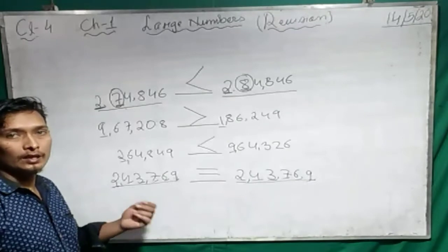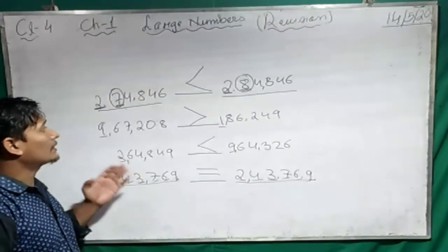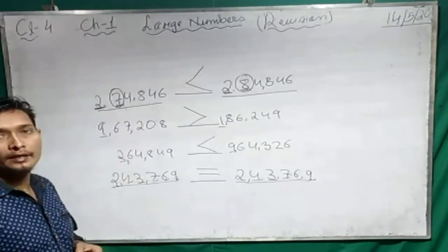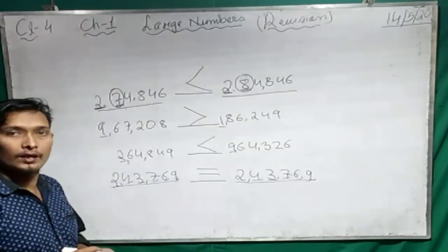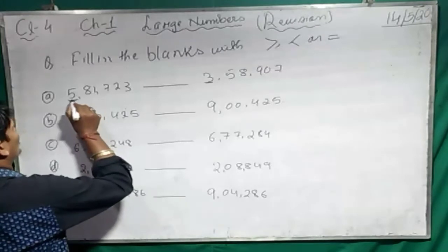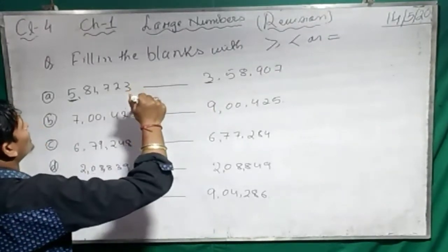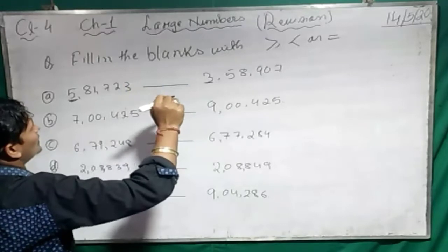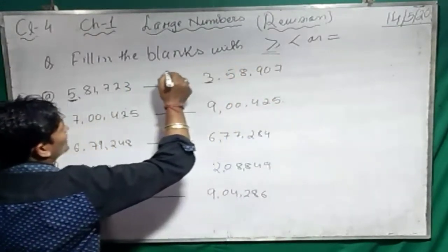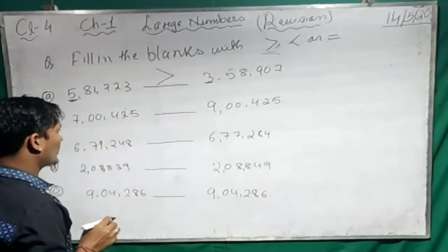Start by counting how many digits there are. Then, if the digits are the same count, compare the number in each place. Let's do a few questions. This is 5 and this is 3 — which one is bigger? We use the greater than sign, because the open mouth goes towards the greater number.